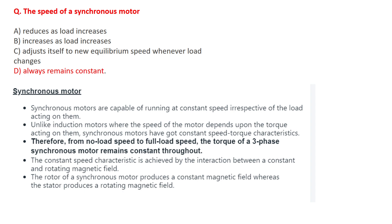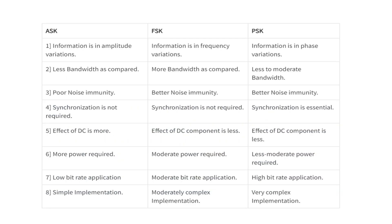There is a table given listing amplitude shift keying (ASK), frequency shift keying (FSK), and phase shift keying (PSK). From this table, questions may be asked such as which one has more bandwidth, which one consumes the least power, which one has better noise immunity, or which one has the lowest bit rate. Two questions were asked from this table, so you should read it carefully.